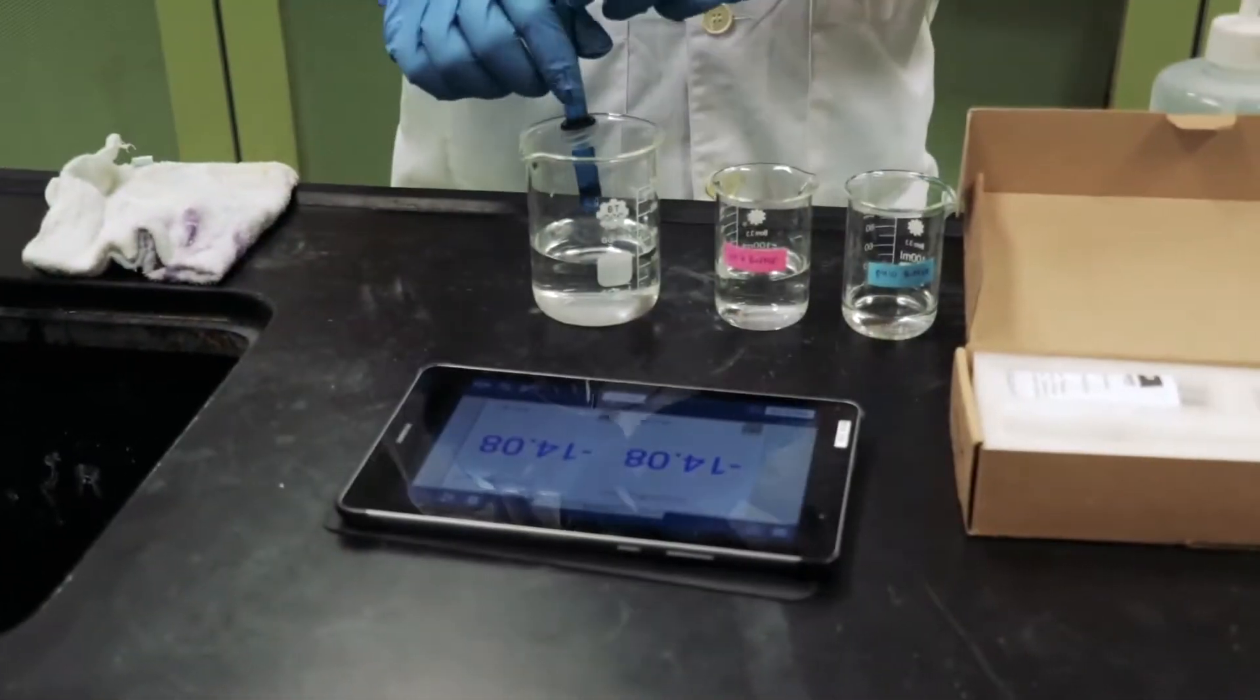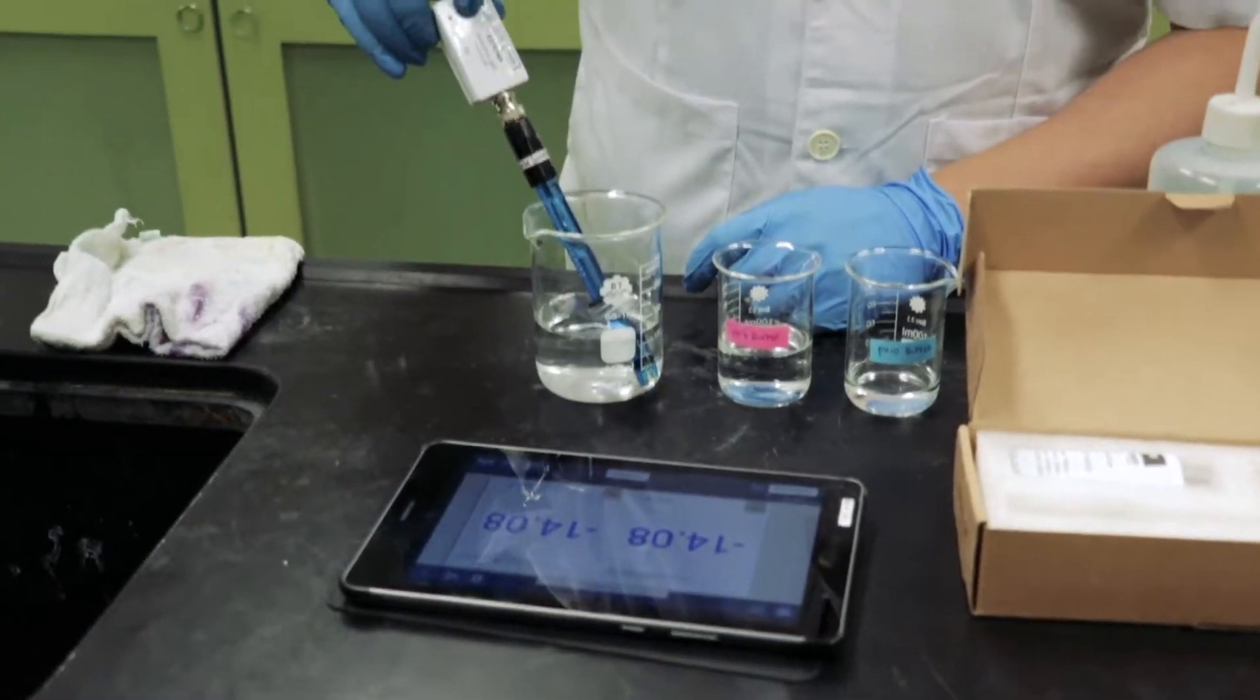To calibrate the PH Probe, launch the Spark View app and select Remote Logging.